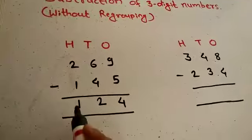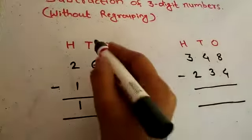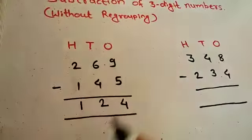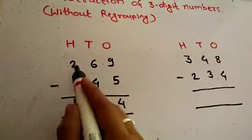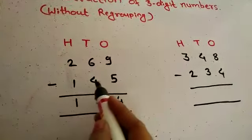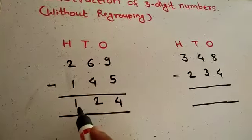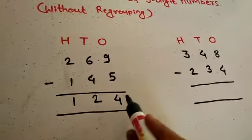Now we have 1 hundred, 2 tens, 4 ones. That is the number 124. So 269 minus 145 equals 124.